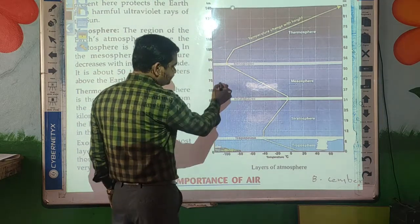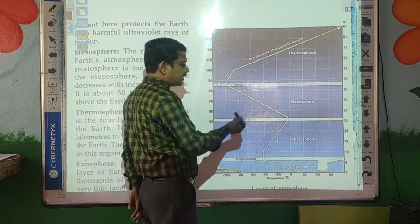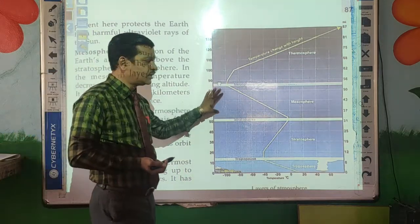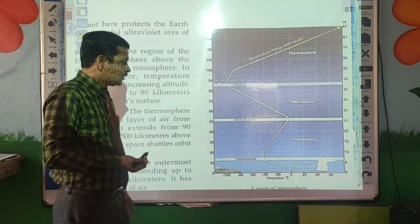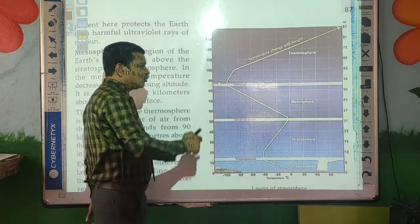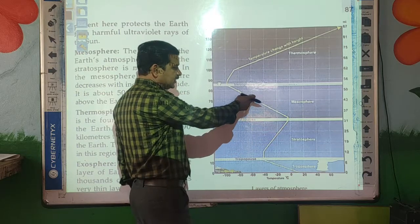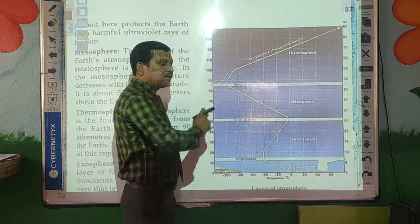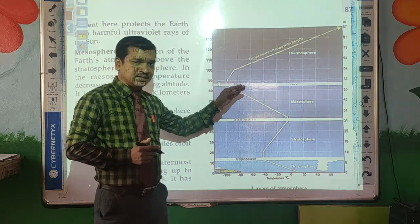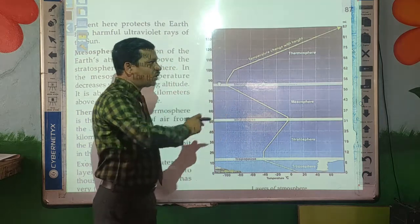The next layer is the Mesosphere, just above the Stratosphere — it is the third layer of the atmosphere. This layer extends from 50 km to 90 km away from the Earth. In this region, as the altitude increases, the temperature decreases. As we go higher, the temperature reduces.